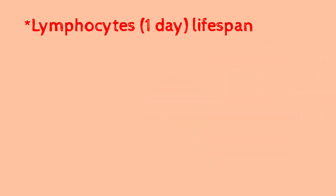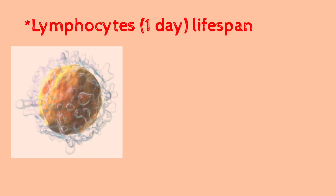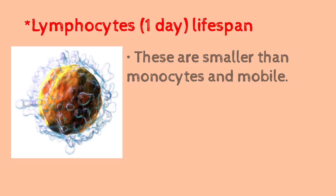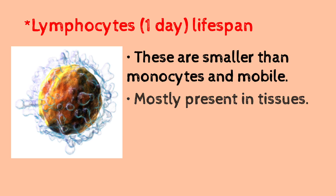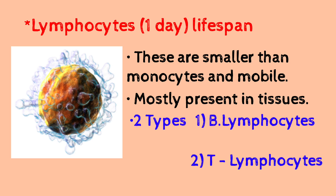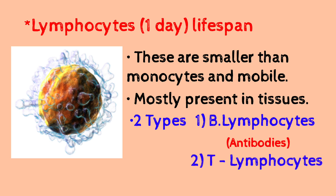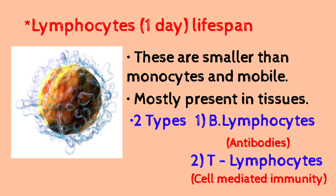The next type of agranulocyte is lymphocytes. Lymphocytes are present in more quantity compared to monocytes. Lymphocytes are divided into two types: T-lymphocytes and B-lymphocytes. B-lymphocytes are mainly responsible for producing antibodies. If a particular antigen enters our body, B-lymphocytes produce antibodies against it. T-lymphocytes produce cell-mediated immunity.